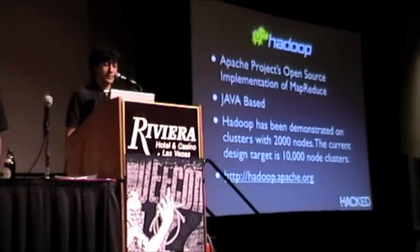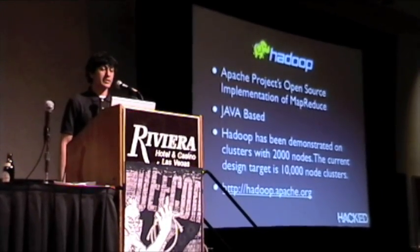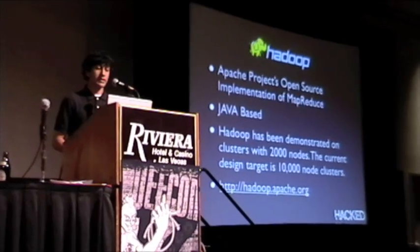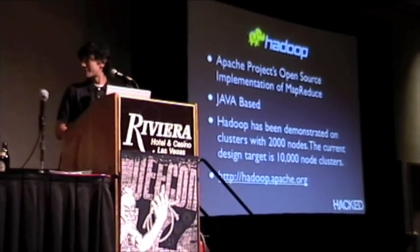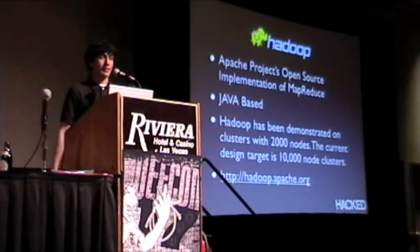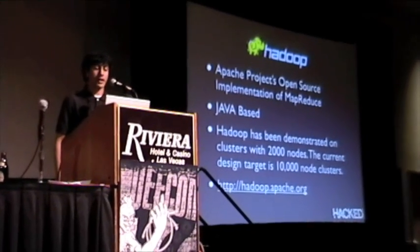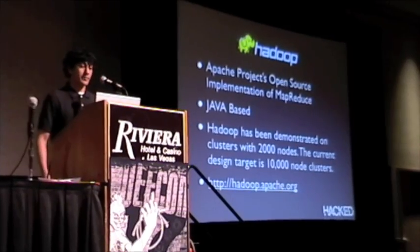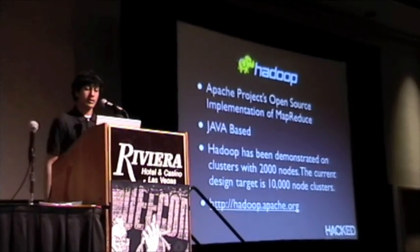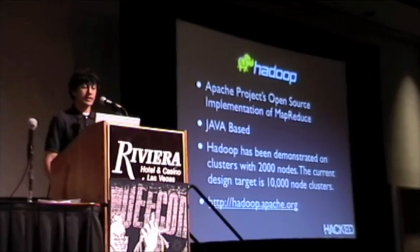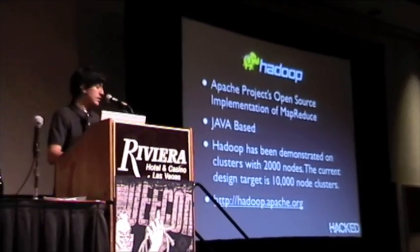Hadoop is Apache Project's open source implementation of MapReduce. It's Java-based, and right now the latest version is 0.20 — our cluster is running 0.19, so it's not yet fully stable. It's been demonstrated on a cluster of 2,000 nodes, but for production they're aiming for a target of 10,000-node clusters. You can check out the website for more information.